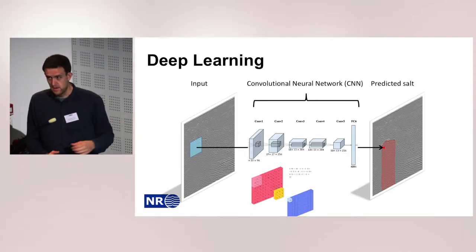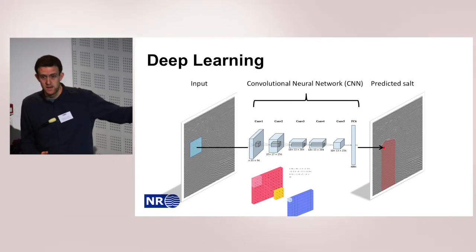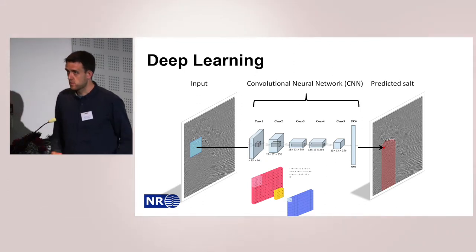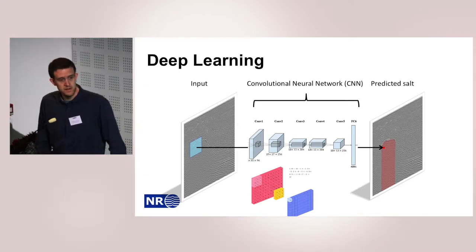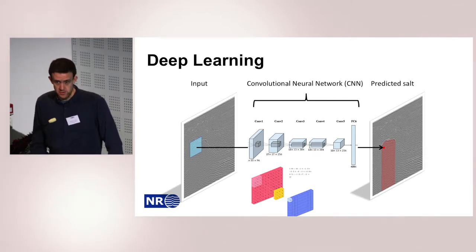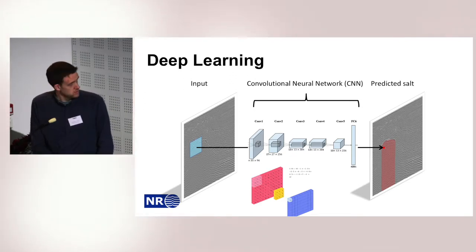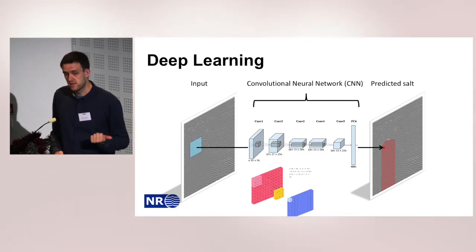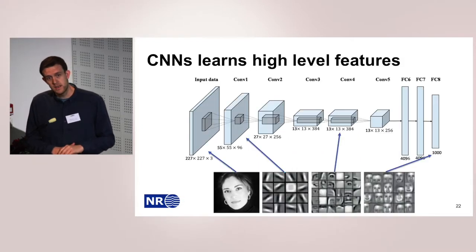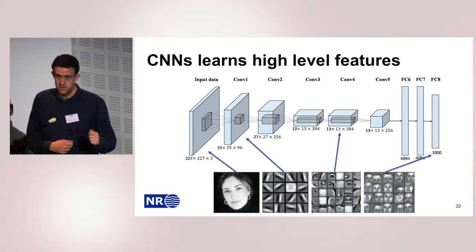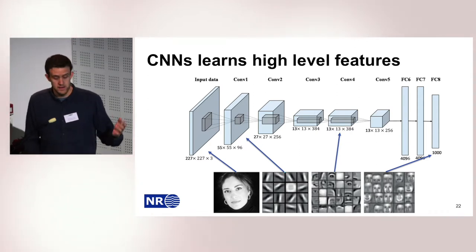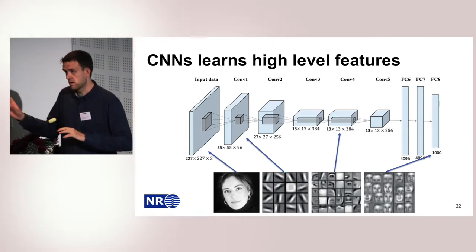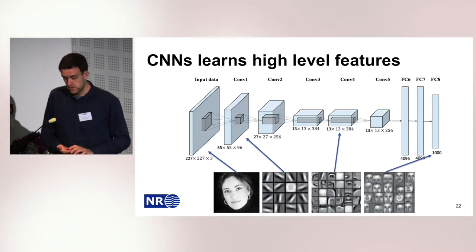This is the idea behind convolutional networks. Each layer consists of convolutions, and instead of training weights as in a normal neural network, we train the filter coefficients. In the first layer, we typically learn to detect low-level features like edges of different orientations. Deeper into the network, these edges are put together to form higher-level features. In the end, we have high-level features that can separate between the classes we want to classify.